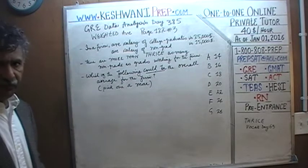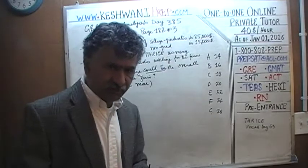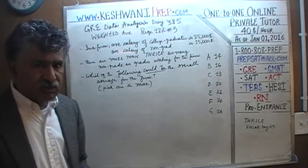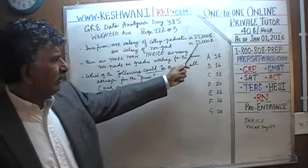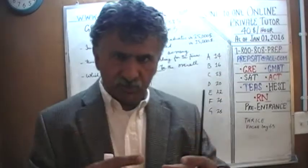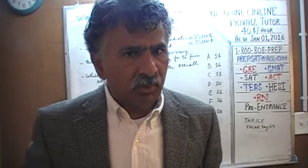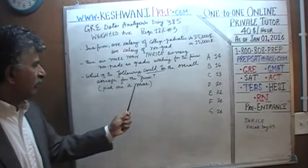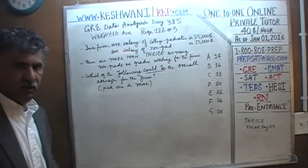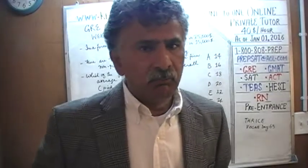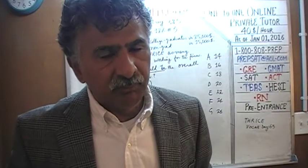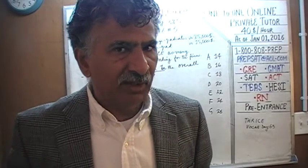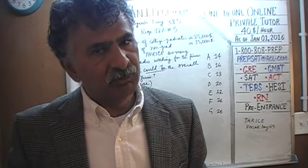What we have to understand is that when we have two groups of people, the overall average, when you combine those groups together, can never ever be more than the highest average of any given group. Whatever the average was for the group with the highest average, the overall combined average cannot go above that.